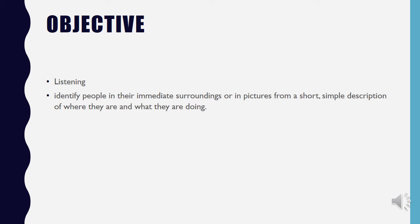First of all, we should have a look at the objective of this lesson. This is a listening lesson in which you have to identify people in their immediate surroundings or in pictures from a short simple description of where they are and what they are doing. We have already discussed identifying people by their physical appearances, but now we are identifying people by a simple description of where they are and what they are doing. It is more fun and it will help you in identifying people from your surroundings.